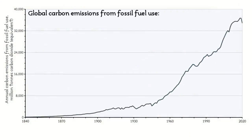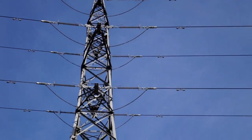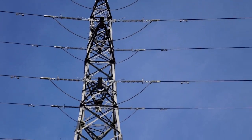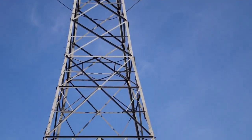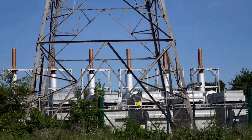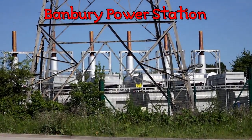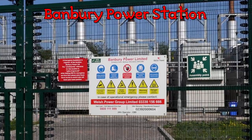This graph shows the global carbon emissions from fossil fuels, in millions of tonnes of carbon dioxide equivalent, listed in the Global Carbon Project's data set. The data stretches back to 1750 and the beginning of the large-scale use of coal in industrial processes. Even so, I'm starting these graphs at 1840, as the earliest data is so small as to be practically invisible. This allows you to see the rest of the data more easily.